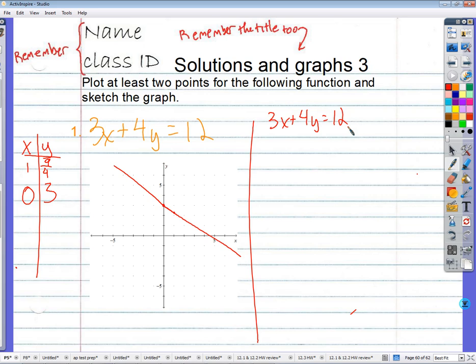That would be 12 minus 3x or negative 3x plus 12. Well, 12 is positive or negative? Positive. We haven't done anything to change that, so 12 is still positive. So 12 minus 3x or negative 3x plus 12. It's the same.